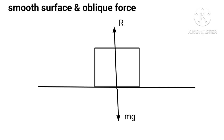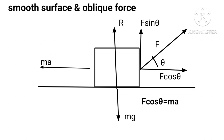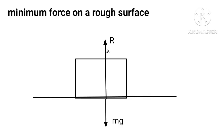If instead of a horizontal force, an oblique force F is applied on the body, we resolve F into two components: horizontal component F cos θ and vertical component F sin θ. With acceleration a tending to oppose motion, F cos θ = ma and R + F sin θ = mg. When we apply a minimum horizontal force F on a rough surface so that the body just moves, frictional force μR comes into play opposing it, hence F = μR.